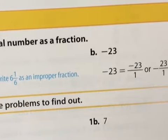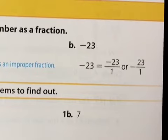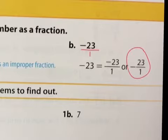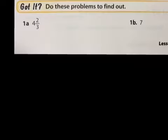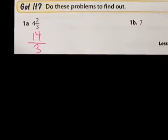Now we're going to convert a negative number into a fraction. We simply put it over 1, so it becomes negative 23 over 1 — the whole fraction becomes negative. Let's practice: 3 times 4 is 12, plus 2 is 14 over 3. That can't be simplified. And then 7 over 1. There's your key answer.